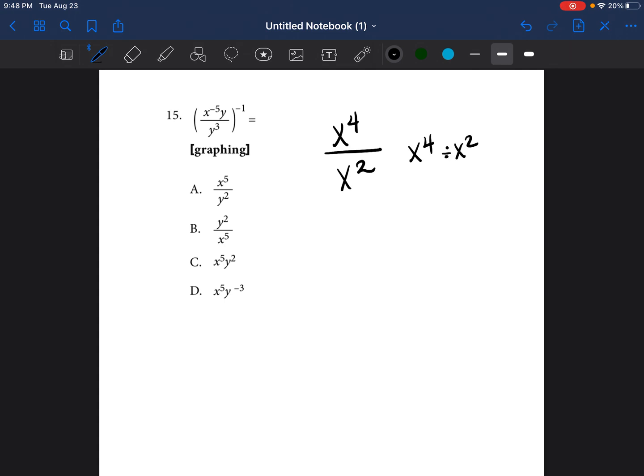The other thing you need to understand is that when you are dividing variables that are the same that have different exponents, in order to figure out what the answer is going to be, you end up subtracting the exponents. So you would do x, 4 minus 2 would be x squared.